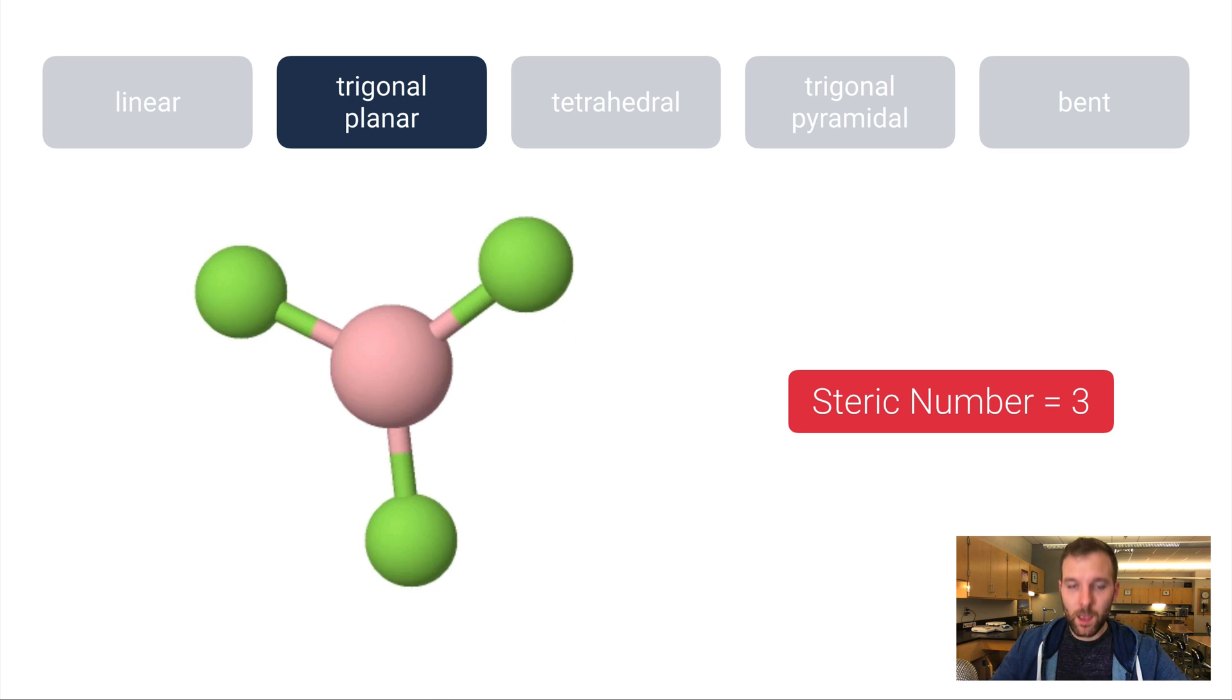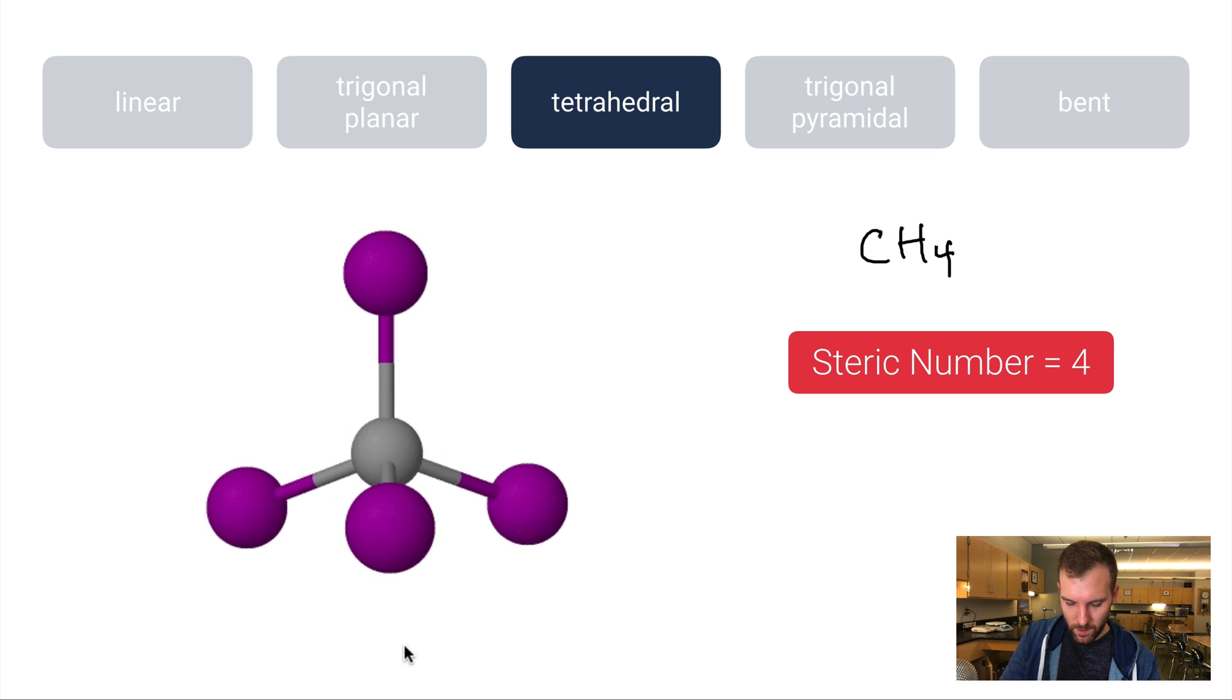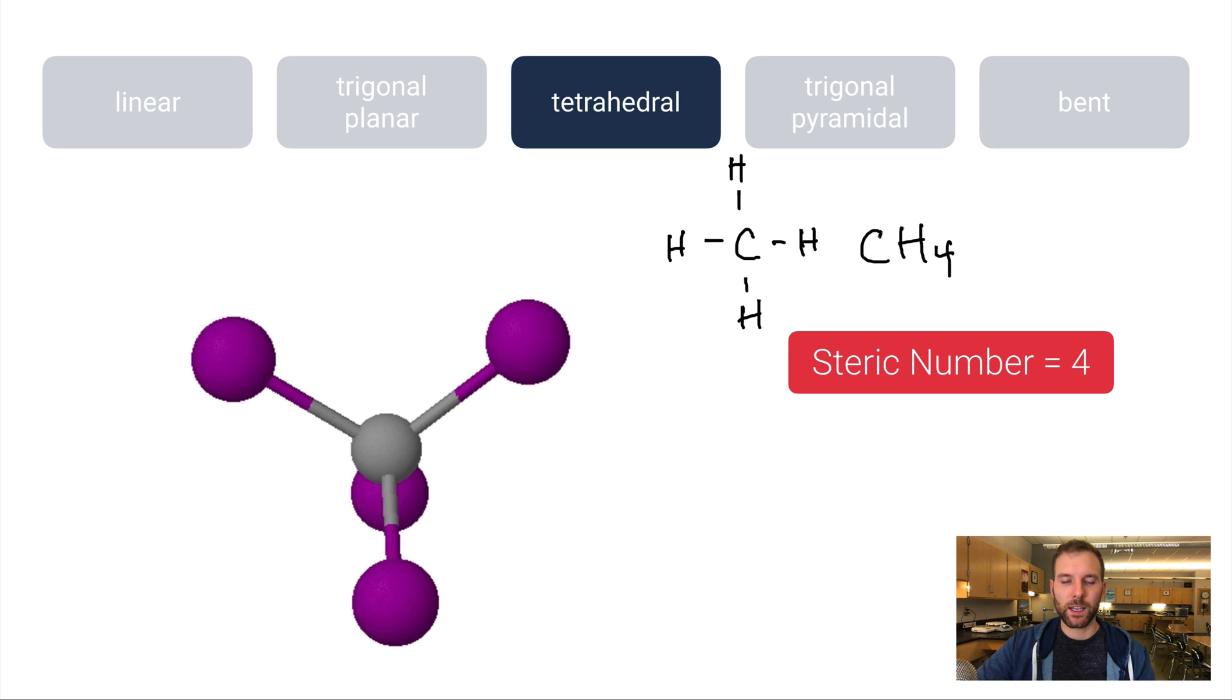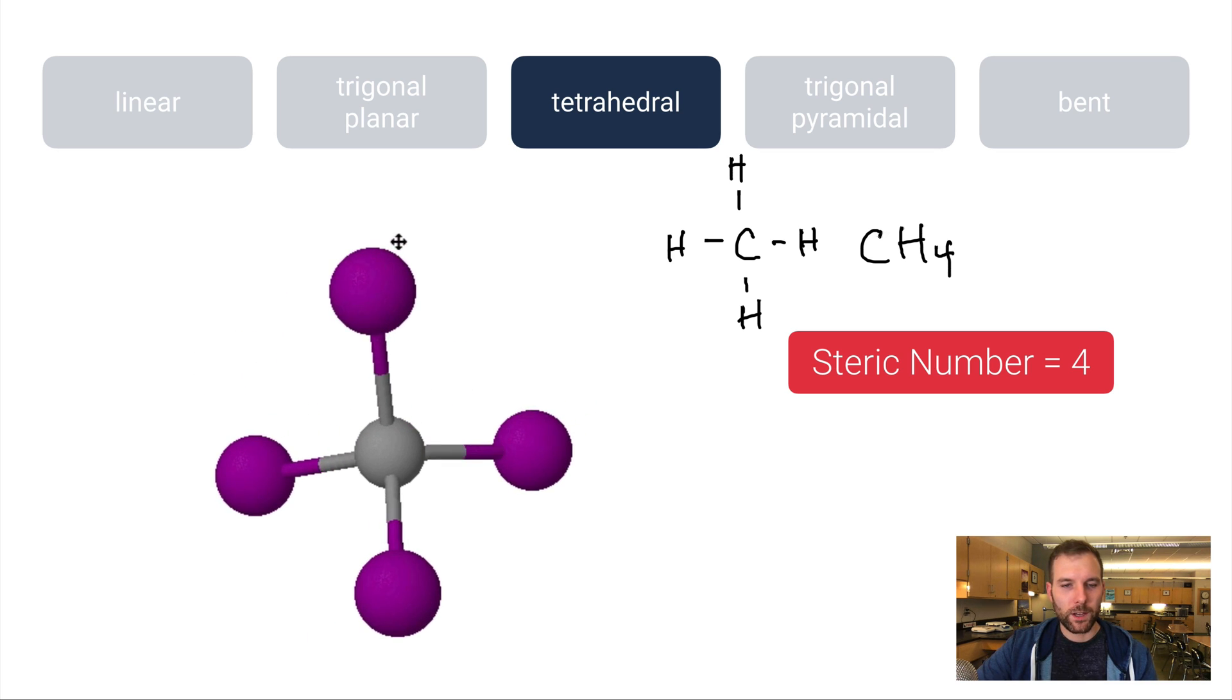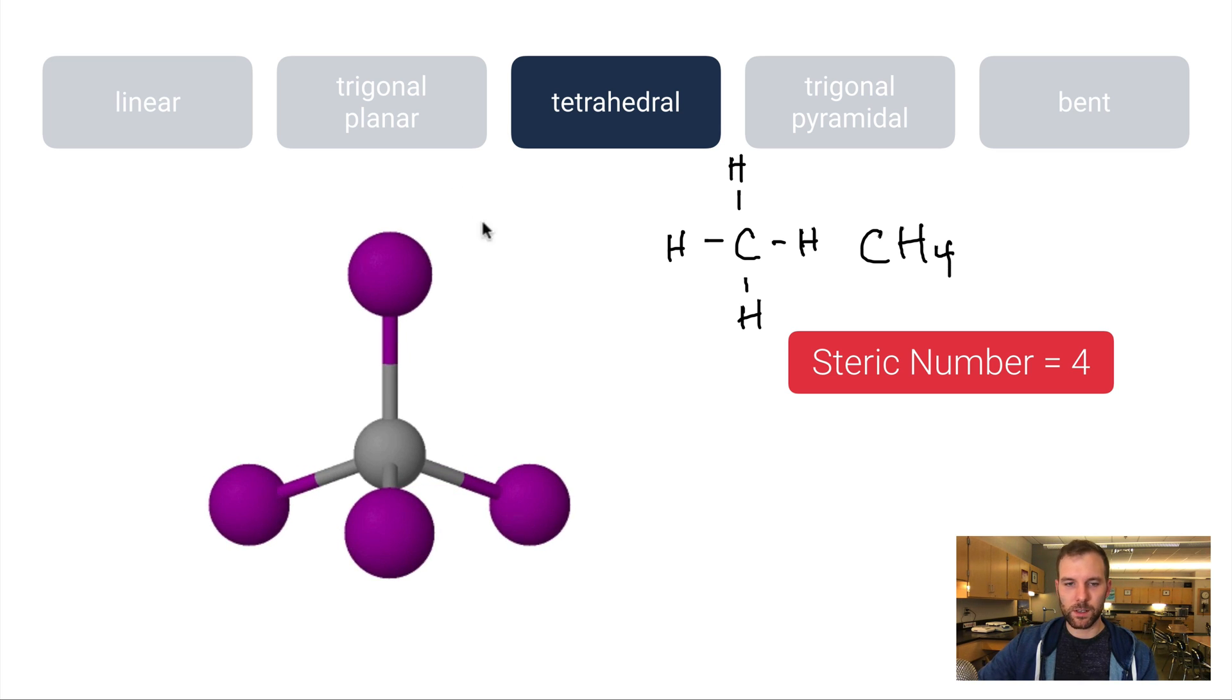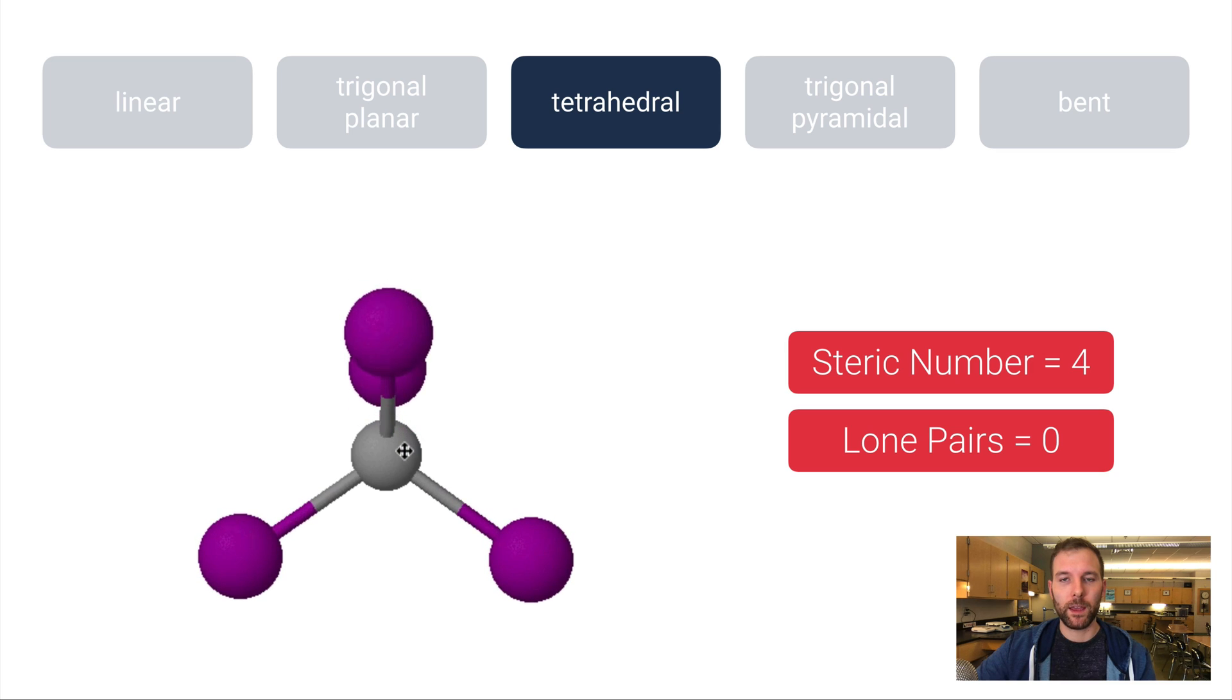So a good example of a trigonal planar molecule would be BF3, boron trifluoride. Let's move along to tetrahedral. Now here's where we have a steric number of four. Tetrahedral is a pretty common shape for molecules. Probably the poster child for a tetrahedral molecule would be methane, or CH4. You kind of have a C with an H on the top, bottom, left, and right. On paper this just looks like a T, but if you look three-dimensionally, it's more complex than that. It's a good idea to kind of get in your head what these things look like in a three-dimensional fashion. This is a steric number of four because there are four atoms around it, but one thing you may not see as easily is that there are no lone pairs on that central atom.